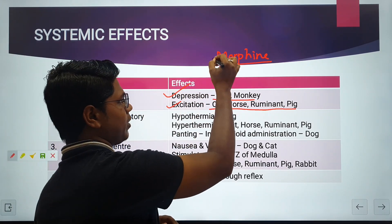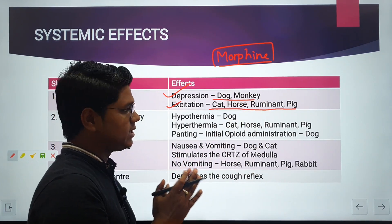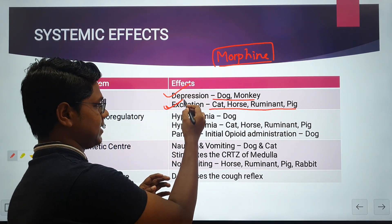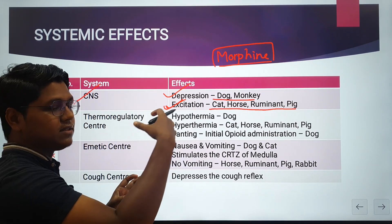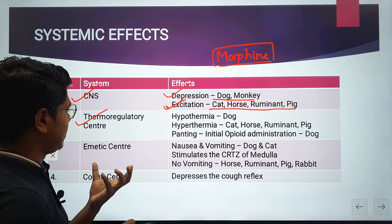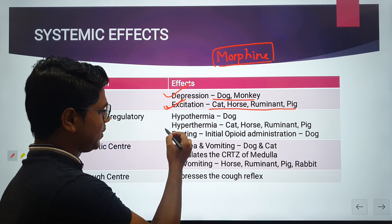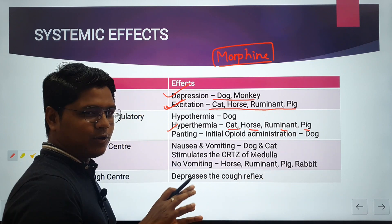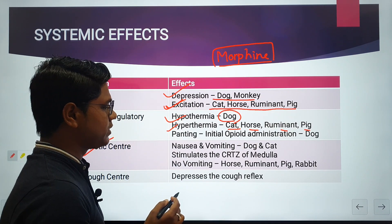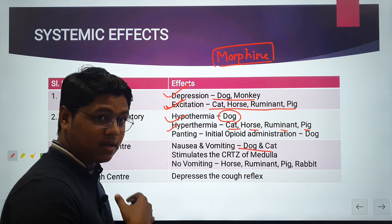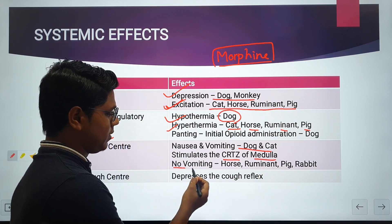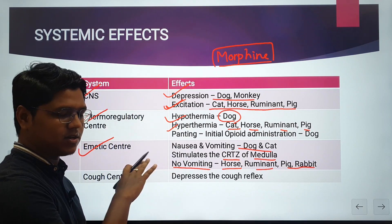Remember: when morphine is given alone it causes excitation in cats, but if you combine it with an alpha-2 agonist like xylazine, you may not find this excitation. All systemic effects described apply when opiates are given alone, not in combination. Regarding thermoregulation: in species where opioids cause excitation — cat, horse, ruminant, pig — they cause hyperthermia; in species where they cause depression, such as dogs, they cause hypothermia.